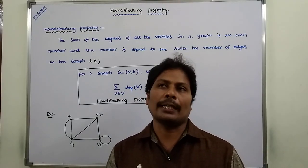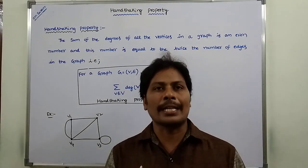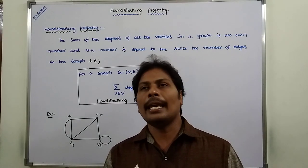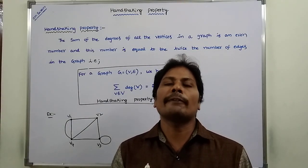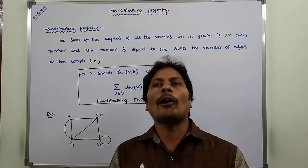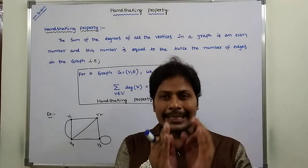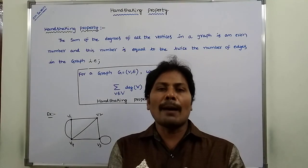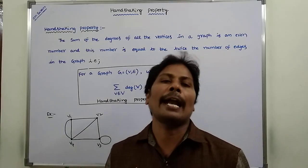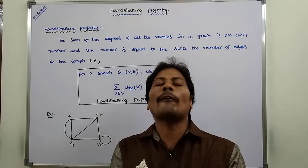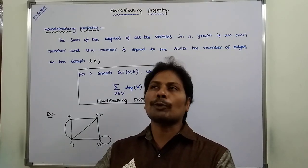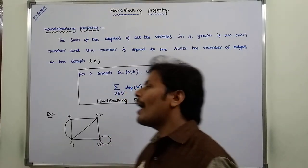First of all, what is the handshaking property? Suppose we are taking a given graph G, where G is equal to (V, E), where V is the set of vertices and E is the set of edges. Each and every vertex has a particular degree. We have to find out the sum of degrees of all the vertices. This number must be an even number, and it is equal to twice the number of edges in the given graph. This is nothing but the handshaking property.